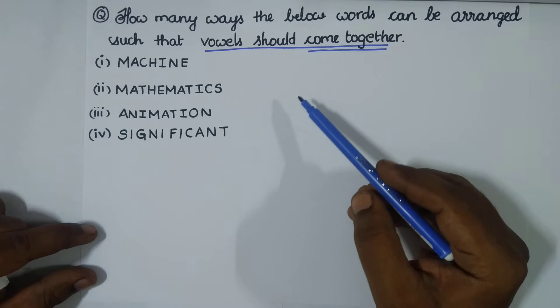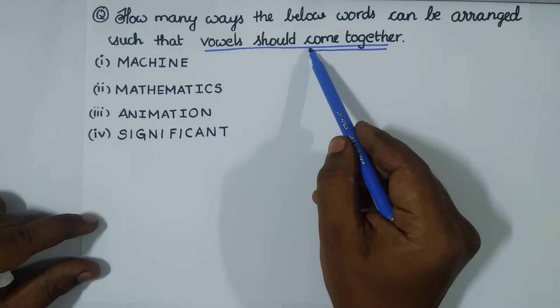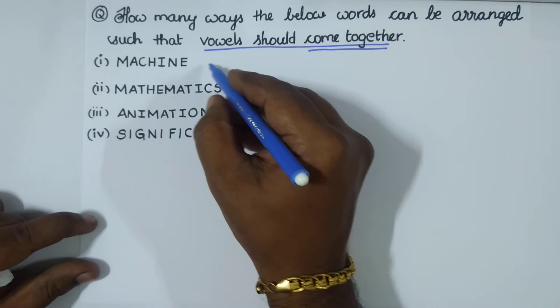Greetings! Here we have another basic question from permutations and combinations. The question is: how many ways can the below words be arranged such that vowels should come together?